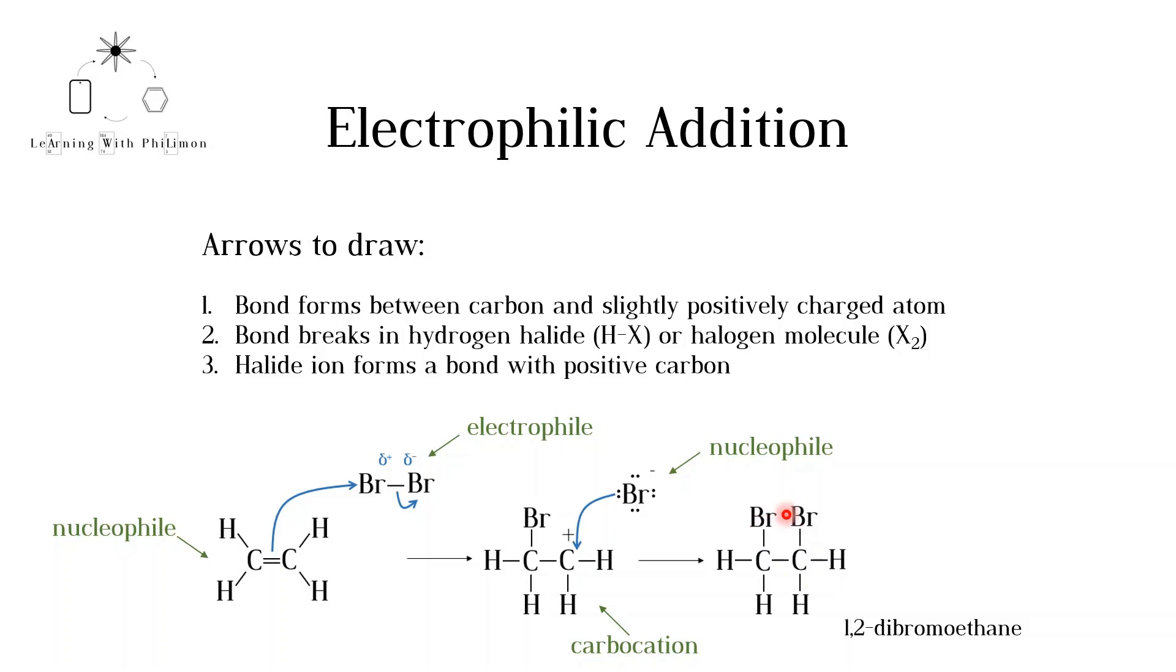Note that the mechanism is called addition because atoms are added to the alkene as the double bond breaks. In higher level questions, you are expected to be able to draw the mechanism between alkenes and hydrogen halides or halogen molecules.